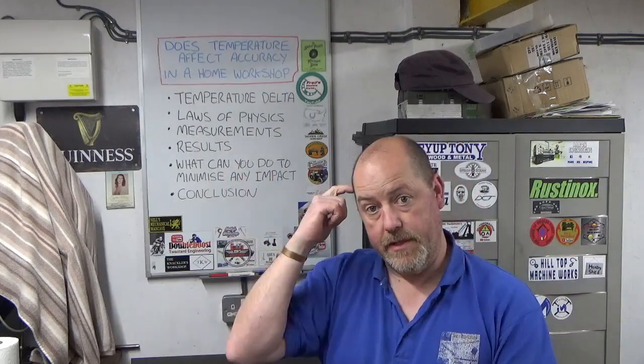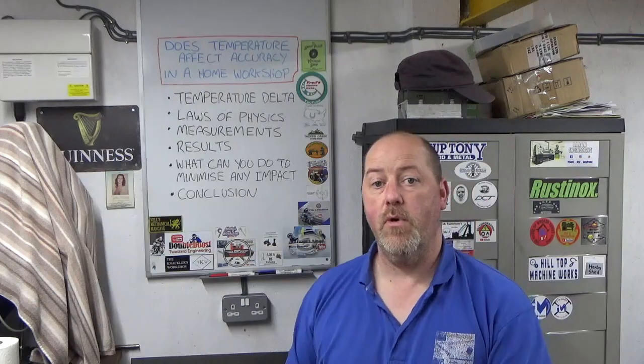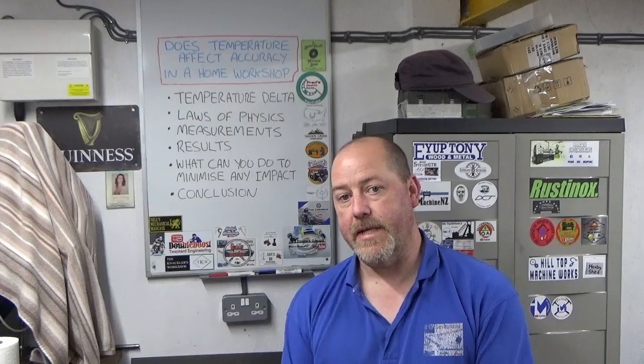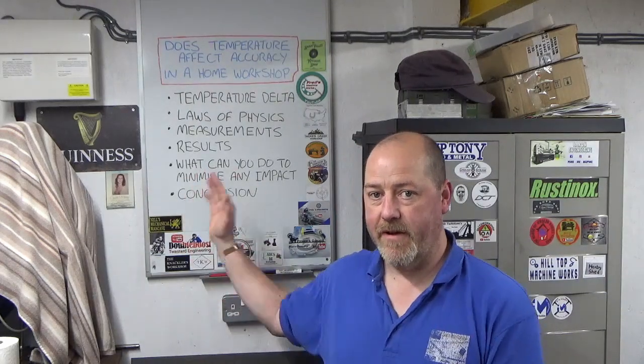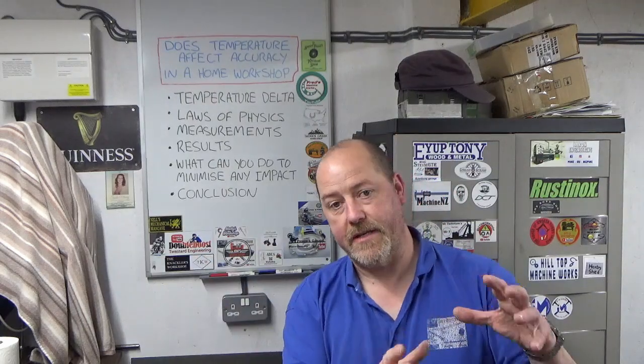We're then going to look at the results and analyze those. We're then going to talk a little bit about what you can do to minimize the impacts of temperature change or temperature delta in a home workshop. Right at the end we'll do some conclusions. Now you've already had the conclusion—the answer is yes, it does affect it—but we'll talk a little bit more about how much it affects it and whether you really need to be worried. So with all of that being said and done, I'm going to clear the board, we'll come back in for a very quick bit of maths, and then we'll move over to the machine and I'll show you the setup that I've done to take the measurements.